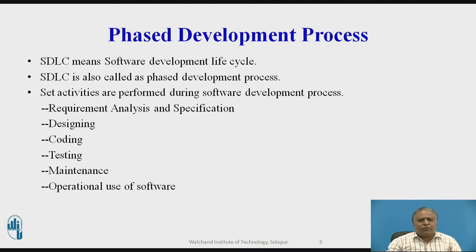The phase development process model — SDLC means Software Development Life Cycle. SDLC is also called the phase development process. The activities performed during the software development process are: first, requirements analysis and specification; second, designing; third, coding; fourth, testing; fifth, maintenance; and sixth, operational use of the software.